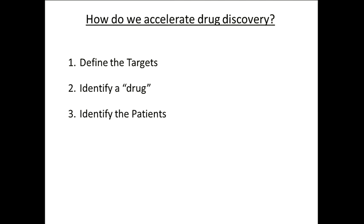How do we do this? It's a very simple philosophy. We try to define targets — these are typically the driver alterations you've heard about for the last few days. We then try to identify a drug that effectively inhibits this target. This is a key point that many geneticists seem to forget: oftentimes we have a very good target, but if the drug is inactive and doesn't inhibit the target sufficiently, you can misinterpret your clinical data.